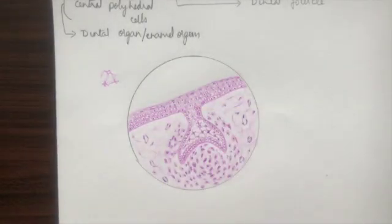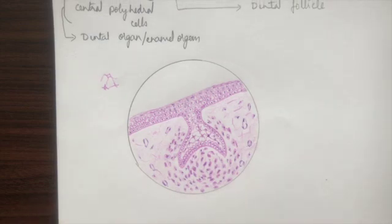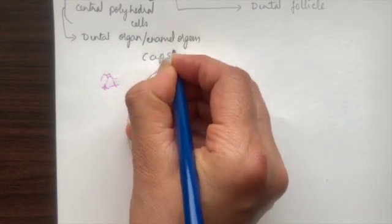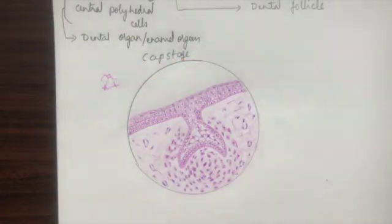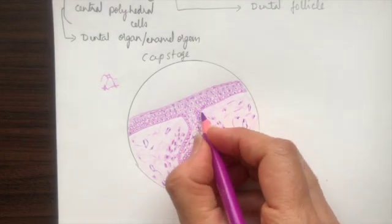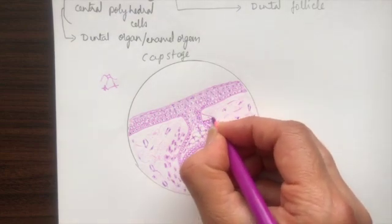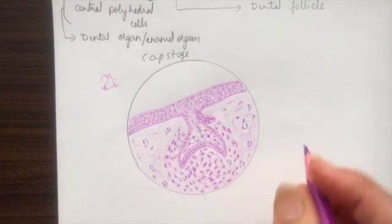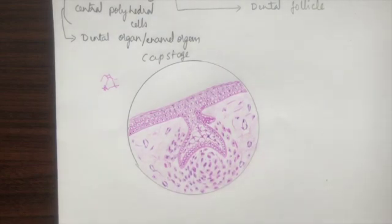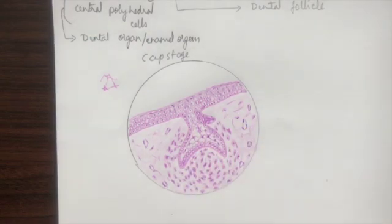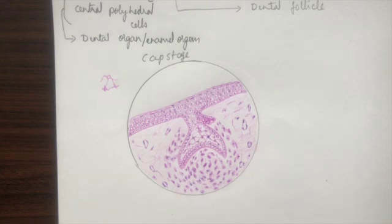Now we have the cap stage drawing of tooth development done. We can also add another structure: as discussed, the successional dental lamina also forms in this stage, so we can include the successional dental lamina here.